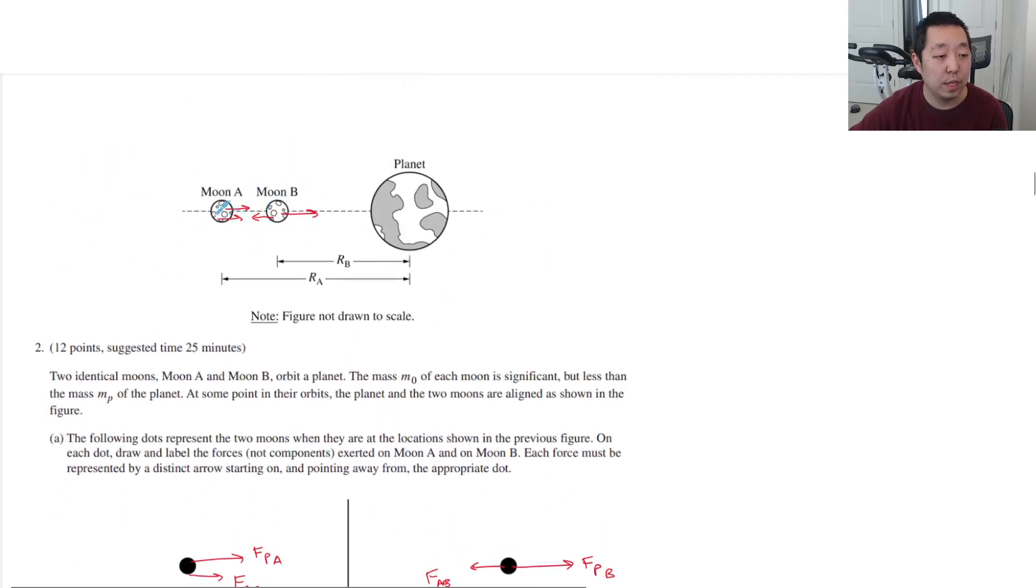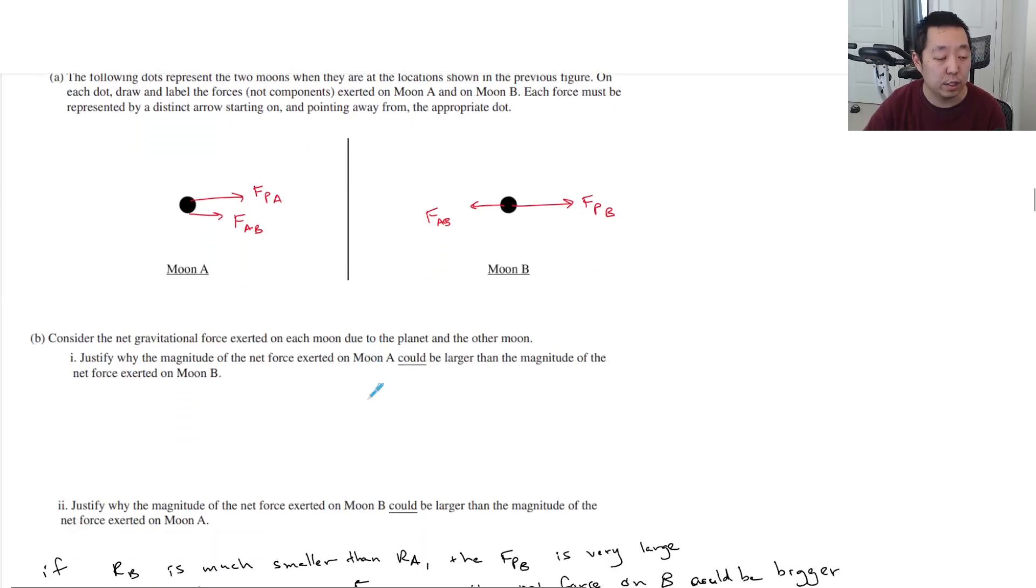The other one could be, well, maybe moon A and moon B are much closer together. The other one could be that moon A and moon B add together. So you could say like here, if RA is very close to RB, so the two moons are close together.